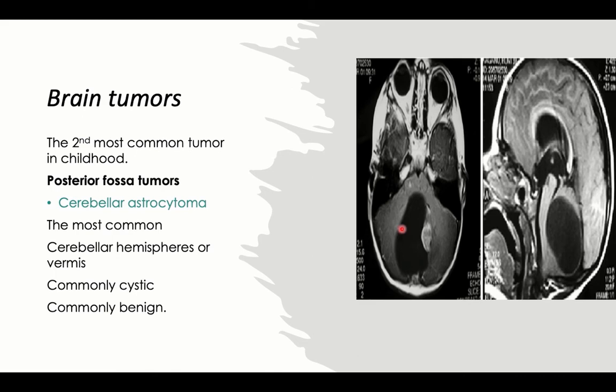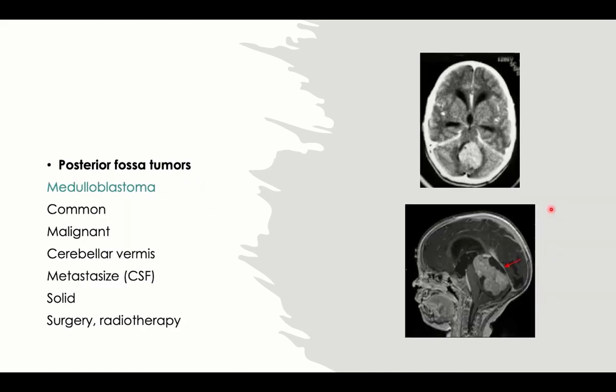The presentation reflects pressure symptoms: cerebellar pressure can cause ataxia, disorganized speech, and other manifestations of cerebellar syndrome, associated with pressure symptoms on the cerebellum and brainstem — potentially causing fifth, seventh, and eighth cranial nerve palsy. This is cerebellar astrocytoma.